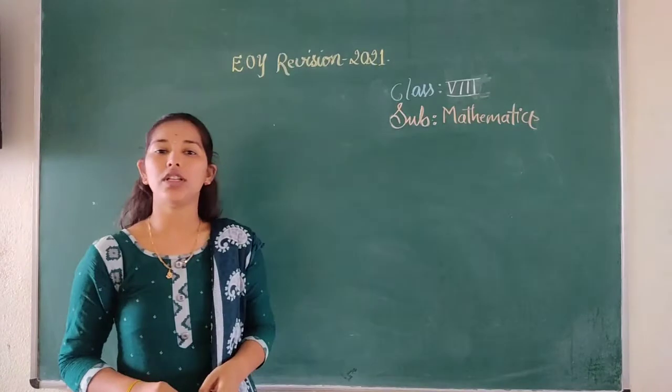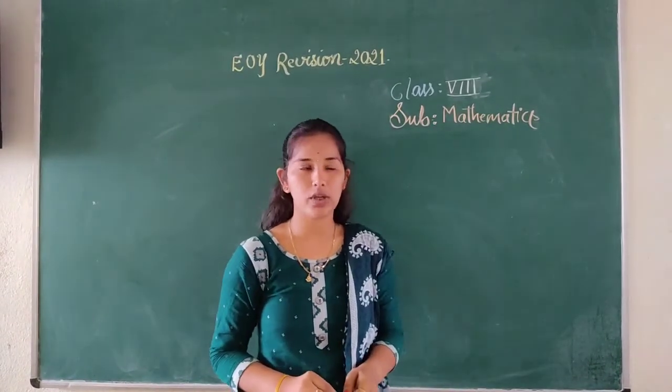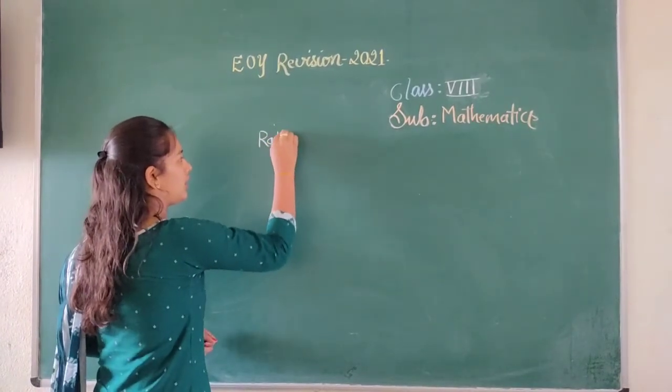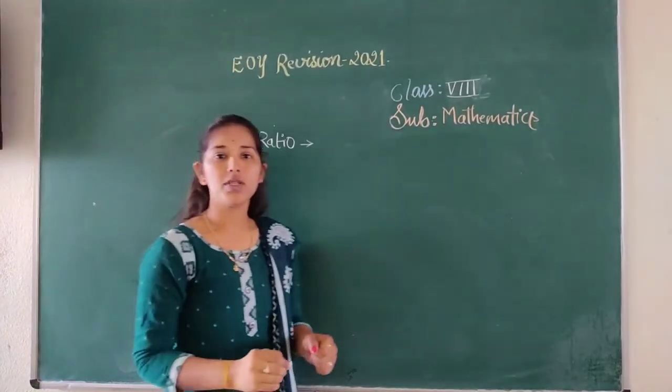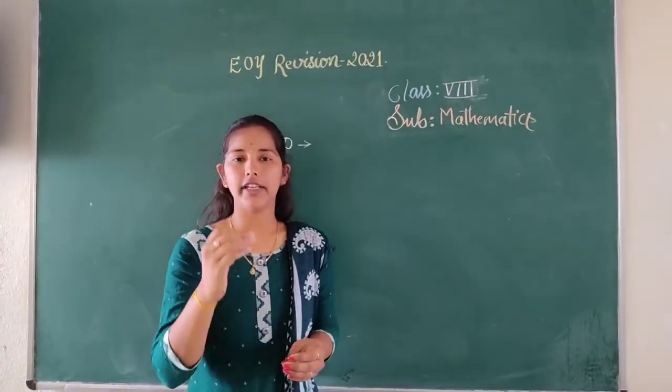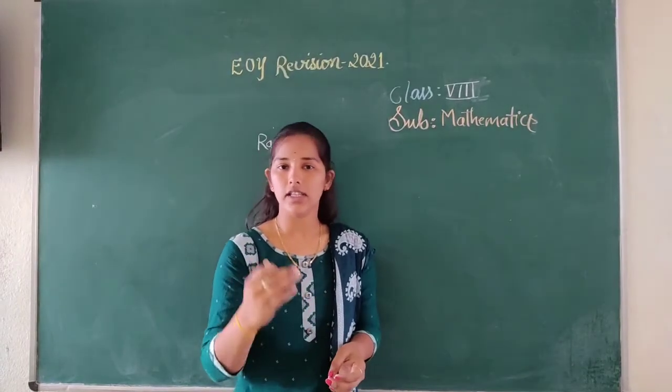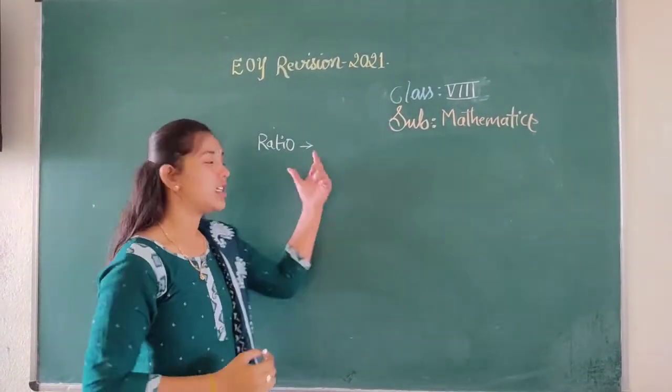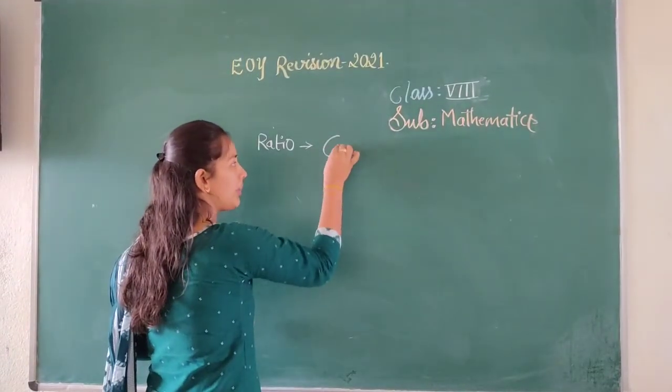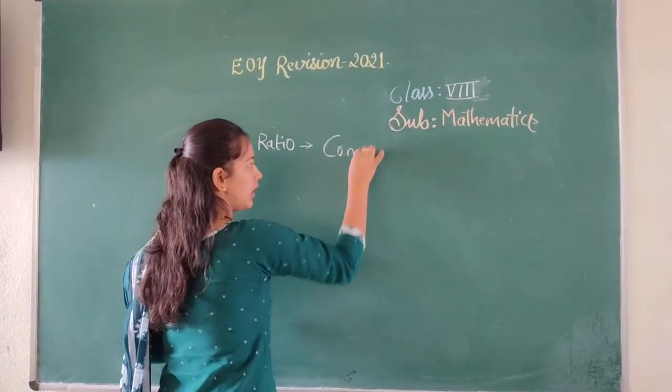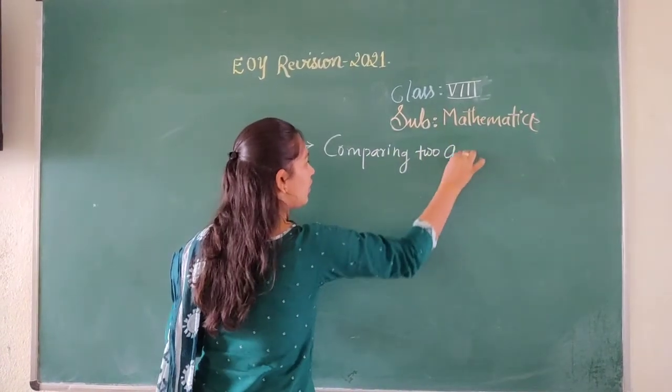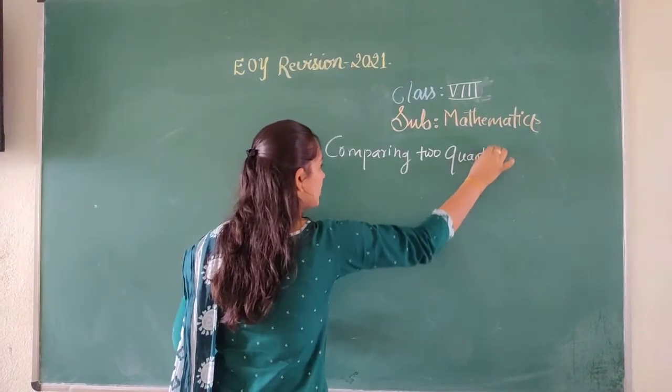You already know about the chapter on ratio and proportion, that is unit 6. What do you mean by ratio? Ratio means comparing of 2 quantities. You know already detailed explanations are given in the physical classes. This is just a revision for you. Ratio means comparing of 2 quantities.